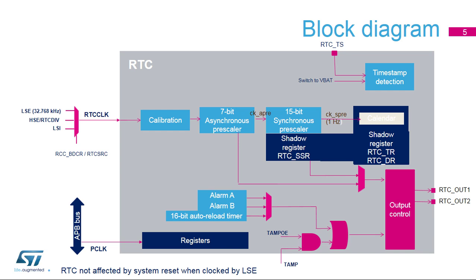The digital calibration is used to compensate crystal inaccuracy and accuracy variations with temperature and aging. This calibration is not suitable for internal oscillators as the digital calibration total range is too small to compensate internal oscillator inaccuracy. The digital calibration consists in masking or adding a programmable number of RTC clock cycles fairly well distributed in a configurable window. The calibration window can be changed on the fly, depending on detected temperature changes, for instance. When the LSE at 32.768 kHz is used as RTC clock, a 1 kHz calibration output signal is provided to measure the crystal frequency before and after applying the calibration value. The calibration window size is configurable between 8, 16, and 32 seconds.